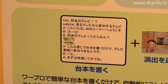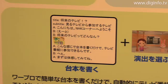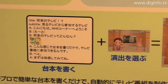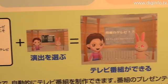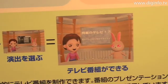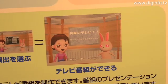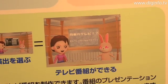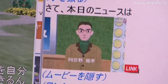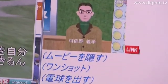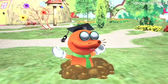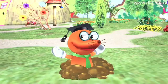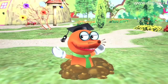In TVML, there are commands that specify the cast's actions, expressions, and speech. Items on the studio sets such as cameras and props can also be specified. The technology for creating videos by typing on a word processor is freeware, so it can be downloaded from the web.